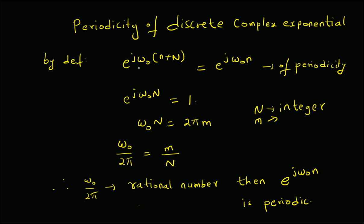By definition, e^(jω₀(n+N)) = e^(jω₀n), which means e^(jω₀N) must equal one. This means ω₀·N must be an integer multiple of 2π, and therefore ω₀ must be a rational multiple of 2π — or equivalently, ω₀/2π must be a rational number — for the discrete complex exponential to be periodic. Thanks for watching.